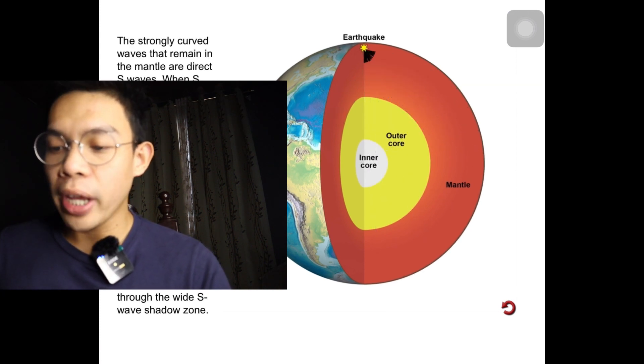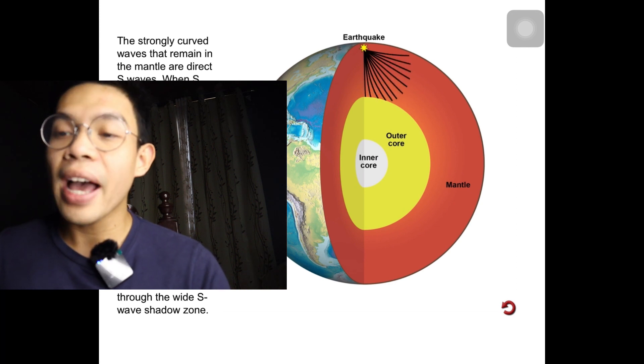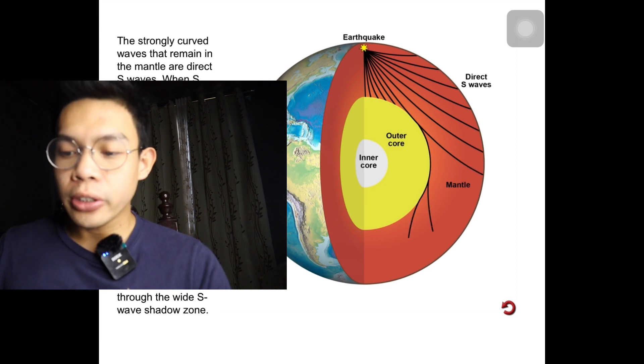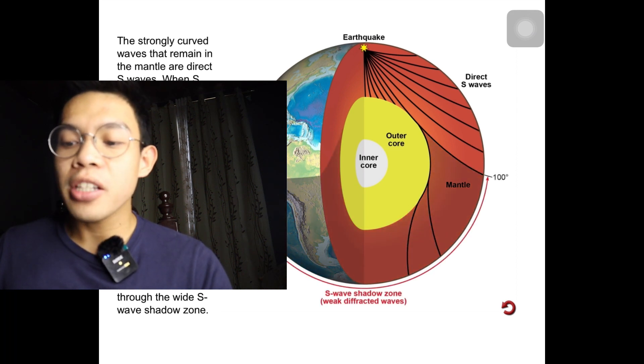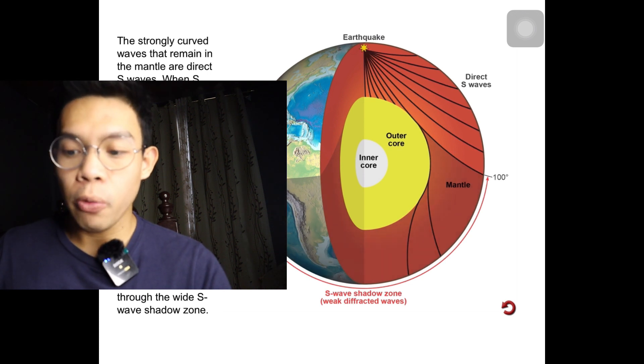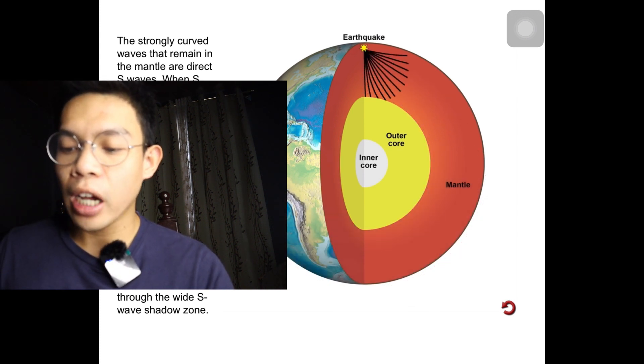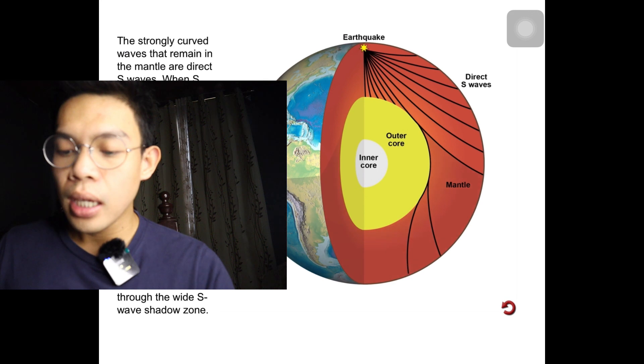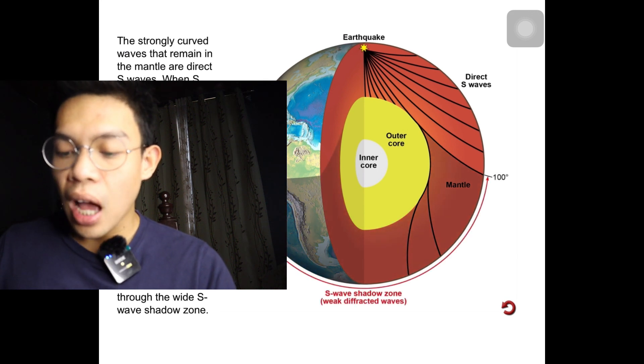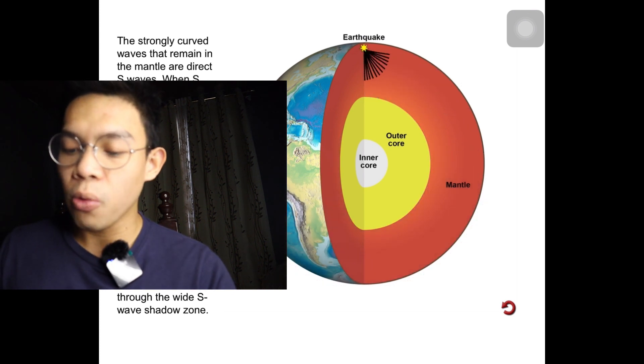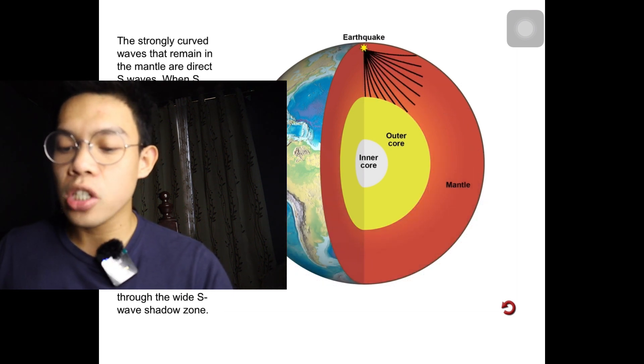Strongly curved waves that remain in the mantle are direct S waves. When S waves reach the outer core, no waves are transmitted because they do not travel through liquids. Also, when a wave passes by a curved surface, such as a layer boundary made up of different compositions, it is diffracted. A few waves diffracted along the outer core are able to travel through the wide S wave shadow zone.